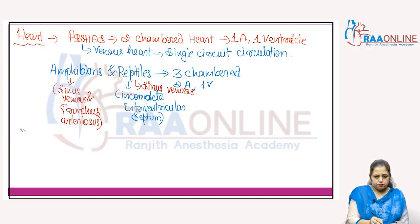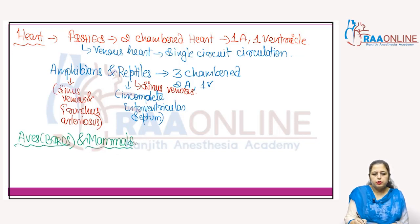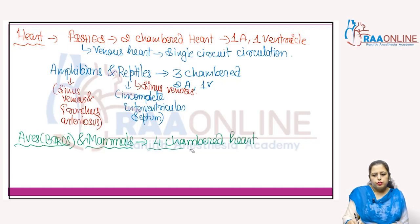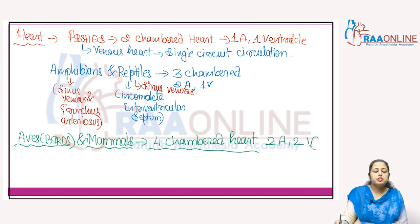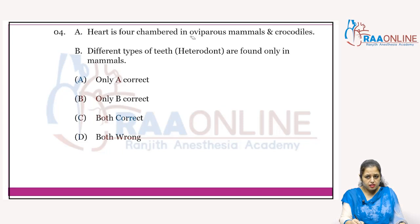In birds (Aves) and mammals, there is a four-chambered heart — two atria and two ventricles — with a complete inter-atrial septum and interventricular septum. The heart is four-chambered, and oviparous means egg-laying mammals. Oviparous egg-laying mammals include the platypus and the echidna. In oviparous animals, fertilization may be external or internal, but development is always external.